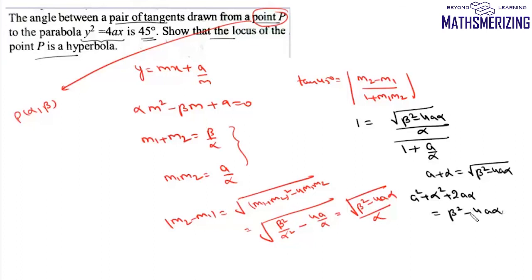We can rewrite this equation as β² - α² - 6aα + a² = 0, which is a second degree equation in x and y.